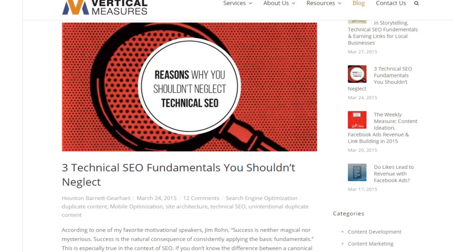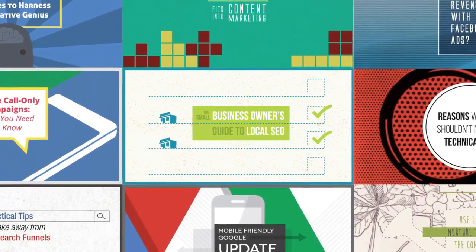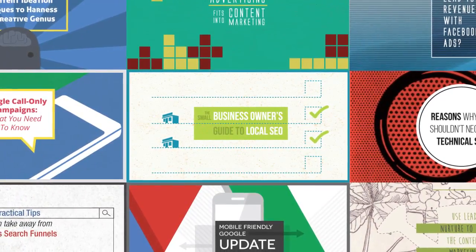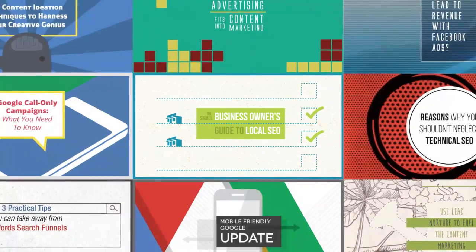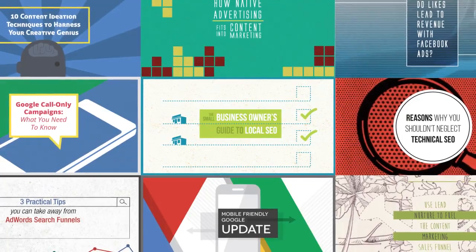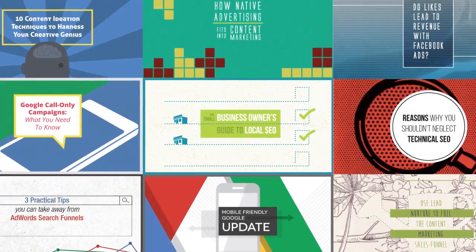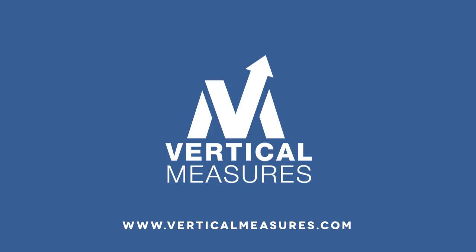If you follow these three tips and add the alt text attribute to every one of your website images, you'll not only be complying with accessibility guidelines, but you'll see an organic SEO benefit — a benefit upon which your competitors may not be capitalizing — and you'll have a better chance of getting web traffic from image search. If you'd like to know more about image optimization, or you're interested in working with Vertical Measures for organic SEO and content creation, you can visit us at verticalmeasures.com.